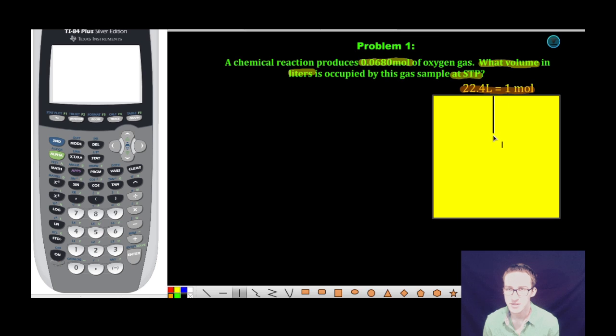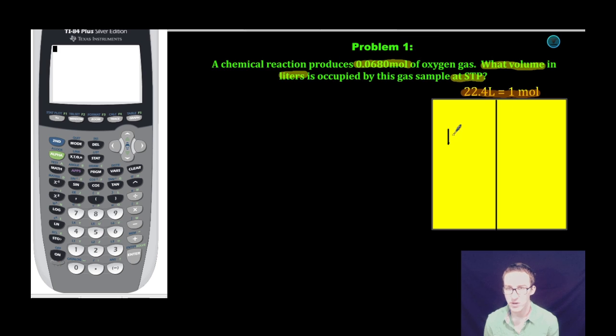If I thought about cutting this diagram in half, I would have 11.2 liters over here and 11.2 liters over here, or I would have half a mole and half a mole. And as you think about what we're provided with in the equation, 0.0680 moles, I know that I'm going to have a lot less than 22.4 liters because I have a lot less than 1 mole. In fact, I'm going to have a lot less than 11.2 liters because I have less than half a mole.